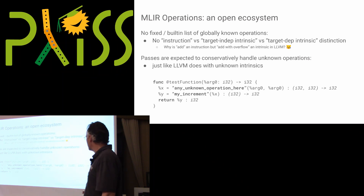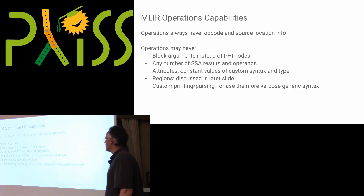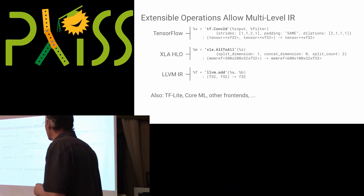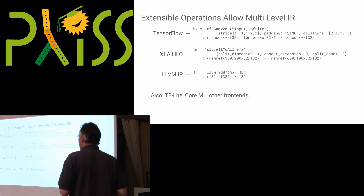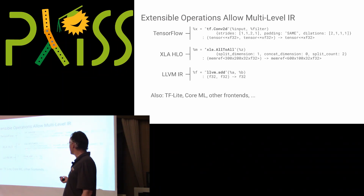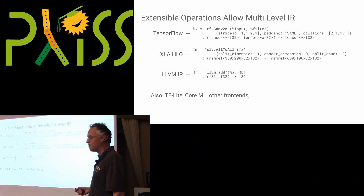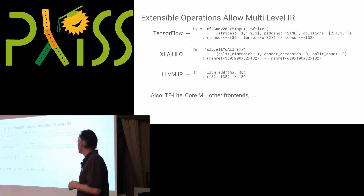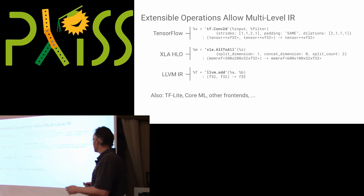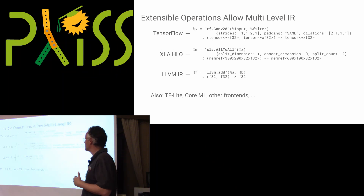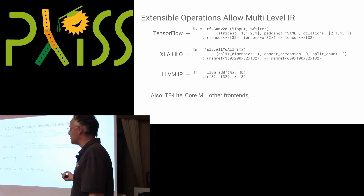What I mean by customizable is that you can mix and match multiple levels of abstraction in the same representation, even in the same function. In a given MLIR function you can have an LLVM add operation with two operands, but also a tensor-level operation from an XLA compiler for TensorFlow that takes an abstract array representation called memref in MLIR. You can type it precisely and attach all kinds of dialect-specific attributes at the same syntactic level as LLVM IR but at a much higher level of abstraction.